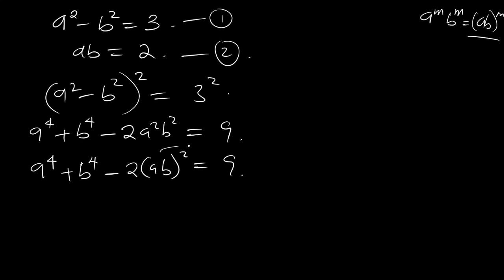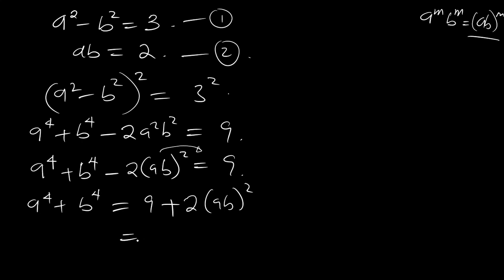You now have a to the power 4 plus b to the power 4 equal to 9. Since it was minus, it becomes plus, so you have 9 plus 2 times ab squared. From equation 2, ab is equal to 2, so you have 9 plus 2 times 2 squared, which gives you 9 plus 8.